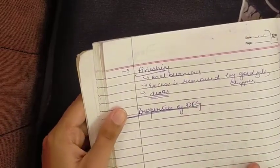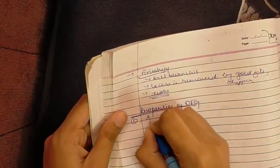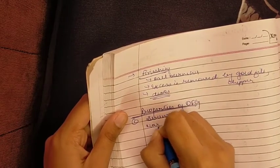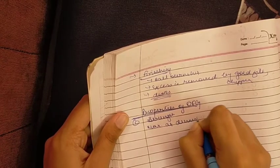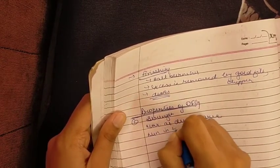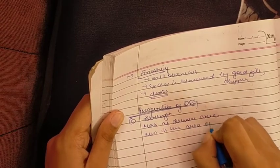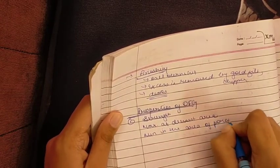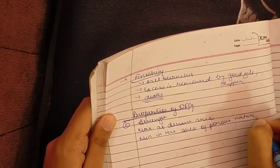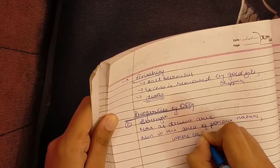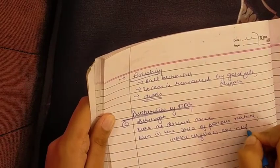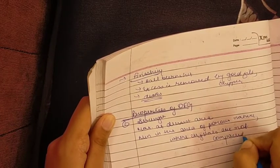In properties of direct filling gold, the first property is strength. Strength is maximum at the densest area and it is minimum in the area where it is porous, in area of porous nature where crystals are not compacted properly.